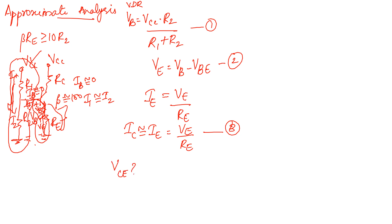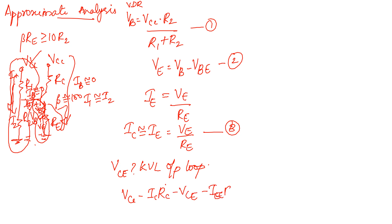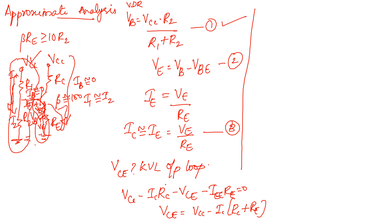To find VCE, apply KVL across the output loop — this is the same as in the exact analysis. VCC minus IC·RC minus VCE minus IE·RE equals zero. Therefore, VCE equals VCC minus IC into (RC + RE) — equation 5.